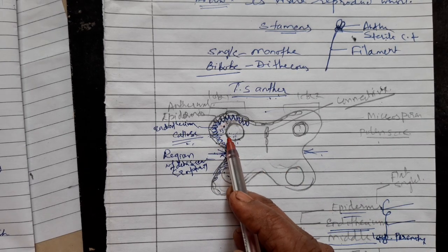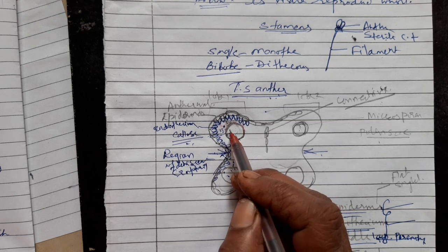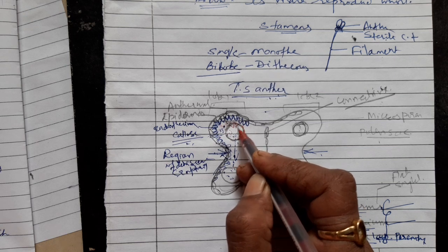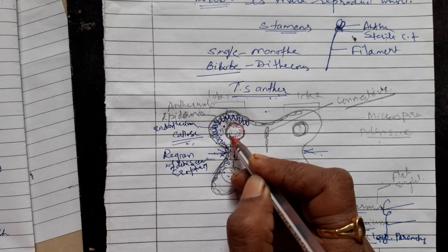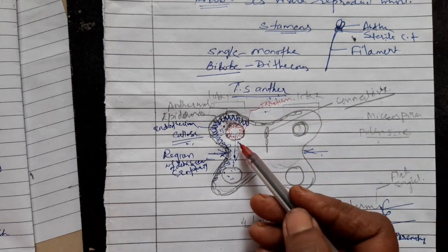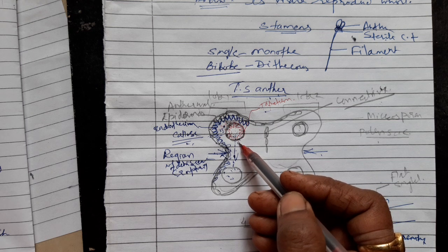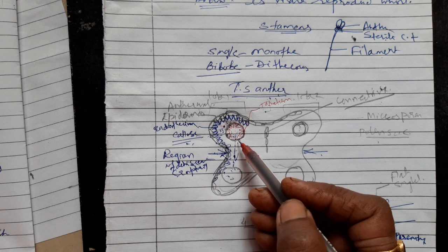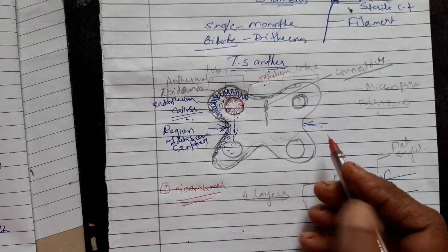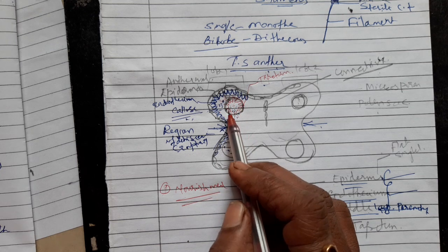The tapetum is the innermost layer. It surrounds the sporogenous tissue of the microsporangia. The special features of tapetum cells are: they are pyramidal in shape, large in size, have dense cytoplasm, and the nucleus is either diploid or polyploid. The function of tapetum cells is to provide nourishment to the sporogenous tissue and the developing microspores inside the microsporangia.